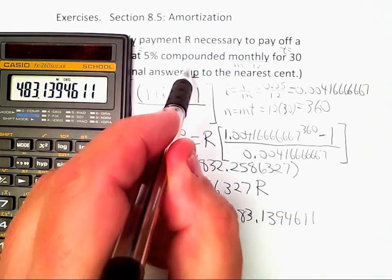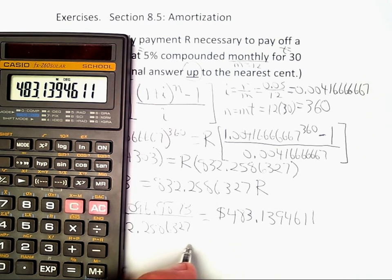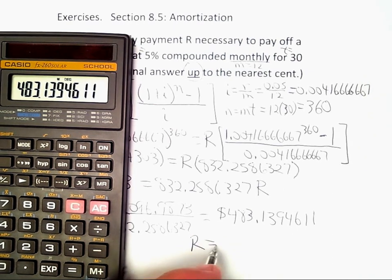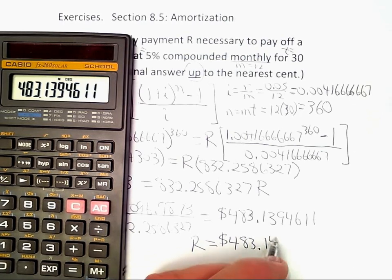And remember, the problem said to round it up to the nearest cent. So if I'm going to round it up, I'll get a value of R, which is a monthly payment of 483.14.